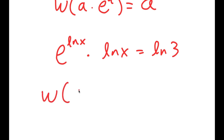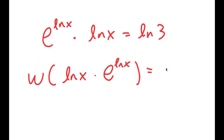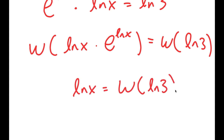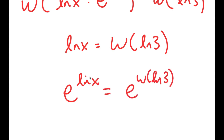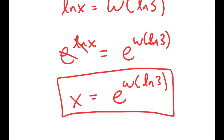So it's in the form ln x times e to the power of ln x is equal to ln 3. If I take the W-Lambert function on both sides, I get W of ln x times e to the power of ln x is equal to W of ln 3. And this left side is just equal to a, so I'm left with ln of x is equal to W of ln 3. Now I want to get rid of this ln, so I'm just going to take e to the power of both sides. Since e to the power of ln cancel out, I get x is equal to e to the power of W of ln of 3. So this is my answer.